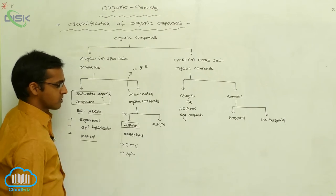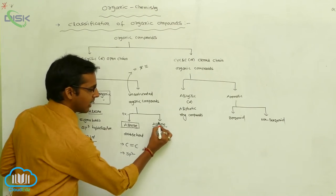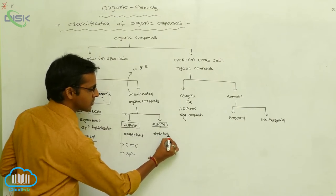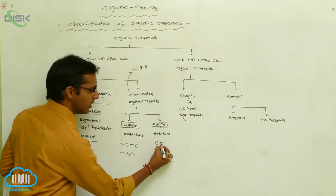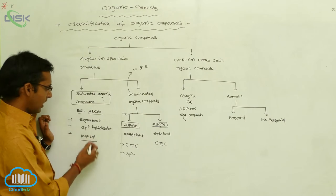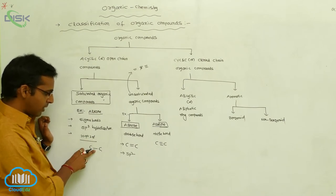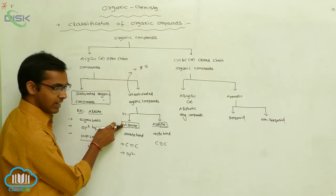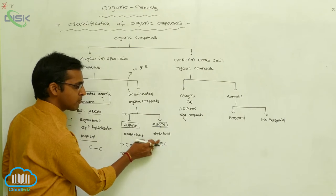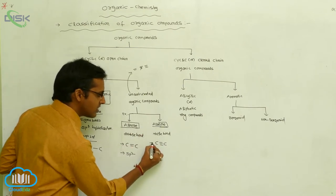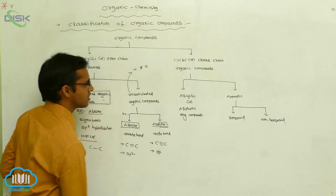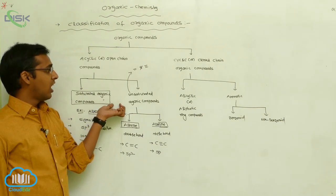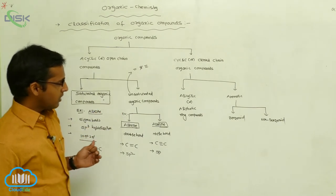In alkynes, the suffix 'yne' indicates a triple bond, so a triple bond is present between the carbons. In alkanes, only a single bond is present between carbons; alkenes have a double bond; alkynes have a triple bond. Generally, alkynes undergo sp hybridization. These are your acyclic or open chain organic compounds.